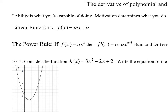So linear functions — y equals mx plus b. If we think about the derivative of that function, f prime of x is always going to be equal to m. Because if we have a line, no matter where we are on that line, the slope of the tangent line is going to be the same. So the slope is always m.